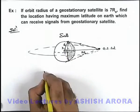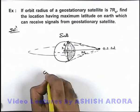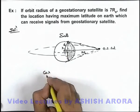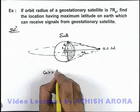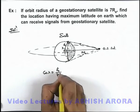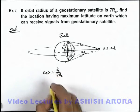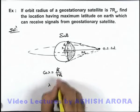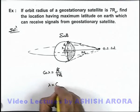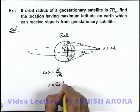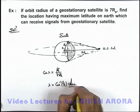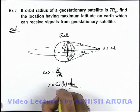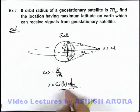This λ can be obtained by calculating the value of cos λ. Here cos λ will be Rₑ over 7Rₑ, so we can directly write the value of λ = cos⁻¹(1/7). That will be the answer to this problem, which we can calculate directly by using the picture of this physical situation.